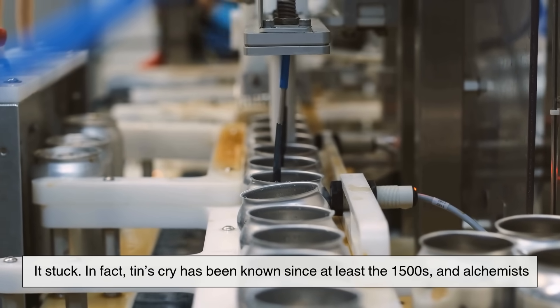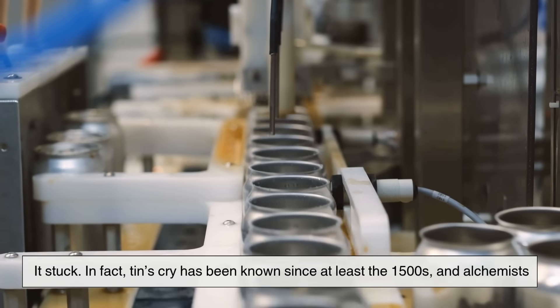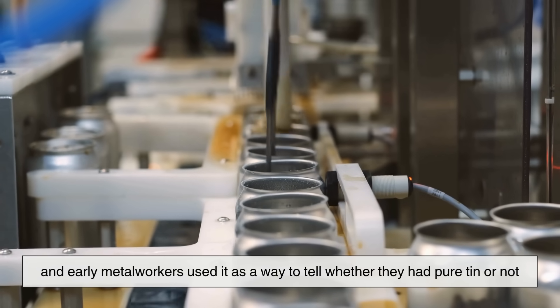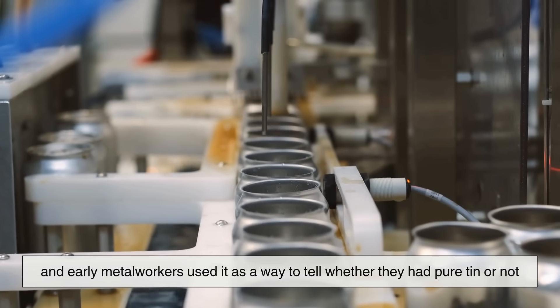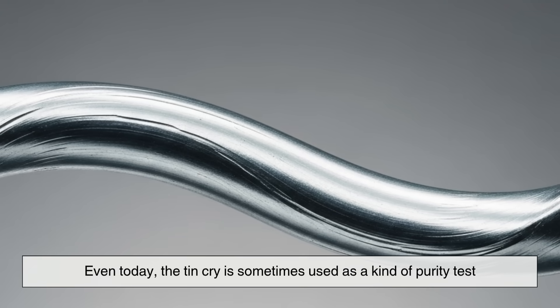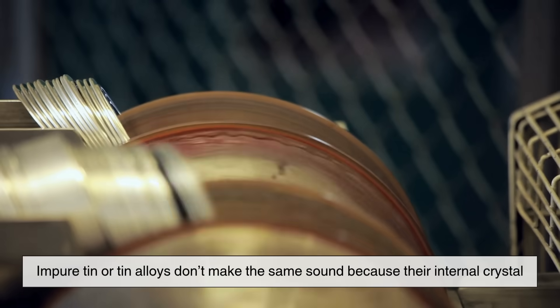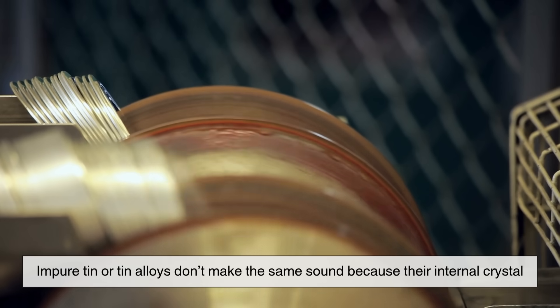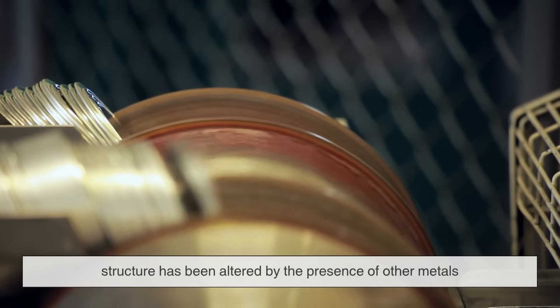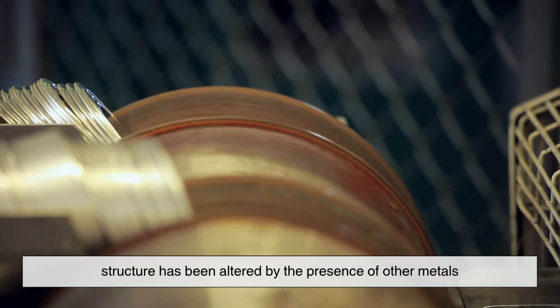In fact, tin's cry has been known since at least the 1500s, and alchemists and early metal workers used it as a way to tell whether they had pure tin or not. Even today, the tin cry is sometimes used as a kind of purity test. Impure tin or tin alloys don't make the same sound, because their internal crystal structure has been altered by the presence of other metals.